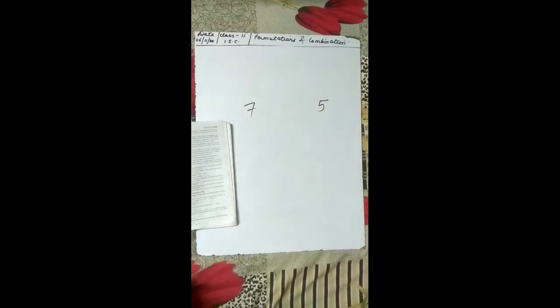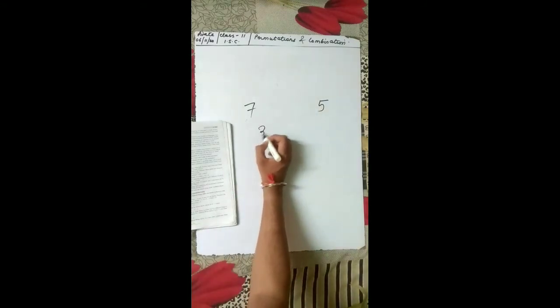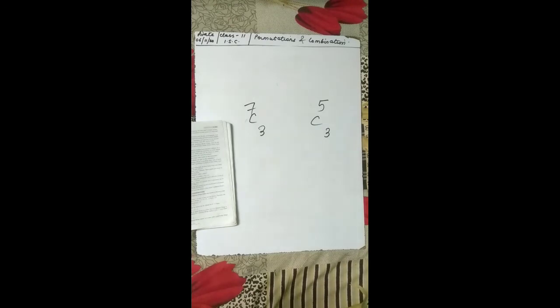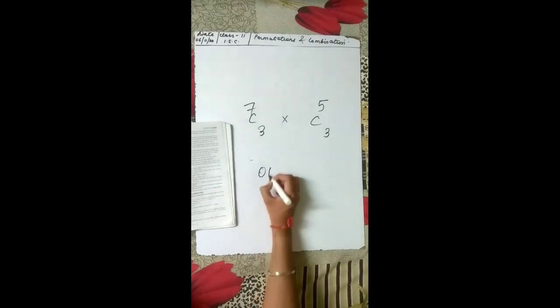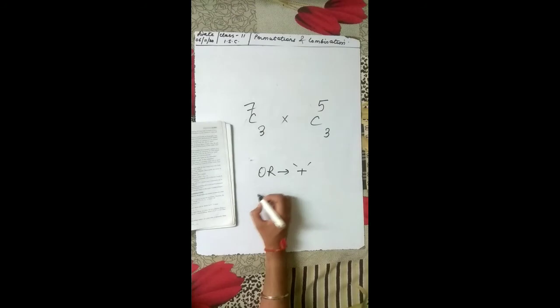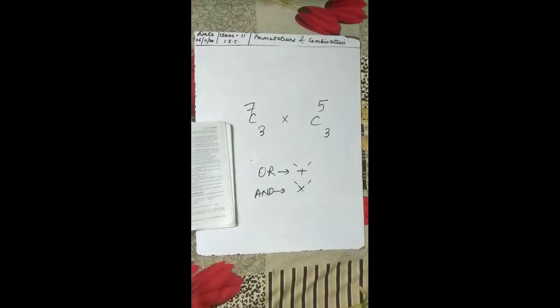Next question: how many different committees, each consisting of 3 girls and 2 boys, can be chosen from 7 girls and 5 boys? From 7 girls and 5 boys, we need to choose 3 girls and 2 boys using combinations. This is an AND case. Always remember: if it is OR, we add; if it is AND, we multiply. So we multiply 7C3 into 5C2 to get the total number of committees.